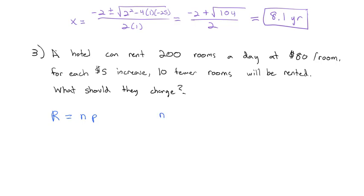Well, what do we know about the number of rooms? We have 200 rooms rented. But for every time I do a price increase, let's say x is going to be the number of increases. Every time I do a price increase, we get 10 fewer rooms. So I'm going to subtract 10 for every one of those increases. So 200 minus 10x is going to be the number of rooms I can rent.